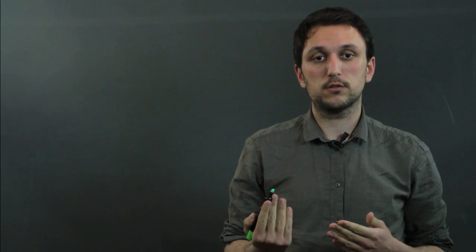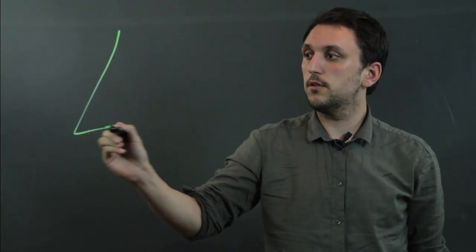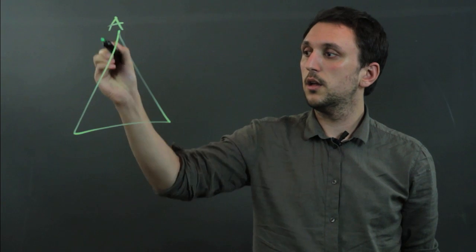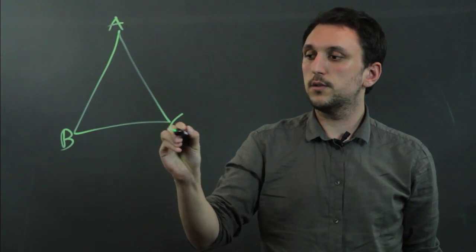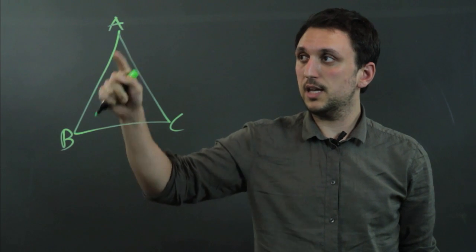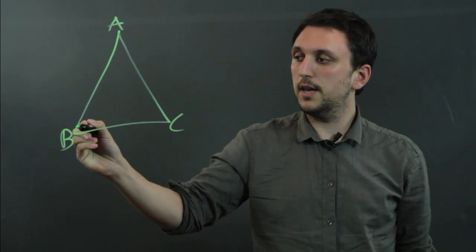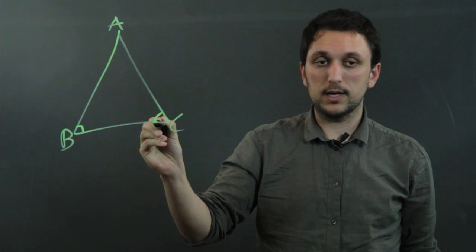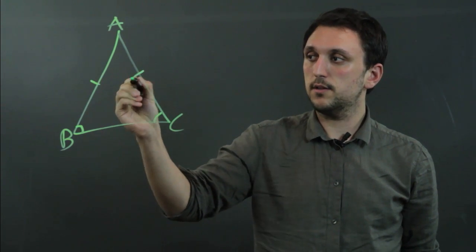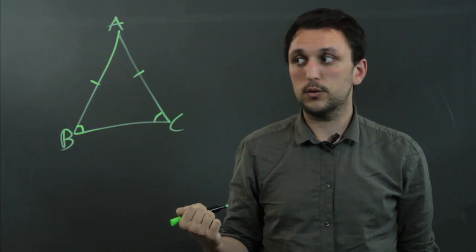Now, Euclid was the mathematician who invented the Isosceles Triangle Theorem, and it basically says that for triangle ABC, if AB equals AC, then angle ABC equals angle ACB. So if this side and this side are equal, then this angle and this angle are equal.